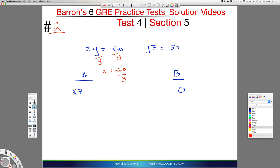If I do the same thing here, because they want us to multiply x times z. If I try to find z here, I'm also going to divide by y. So my z is negative 50 over y.